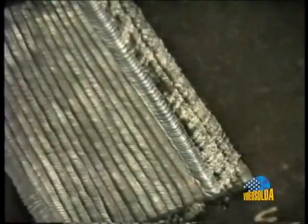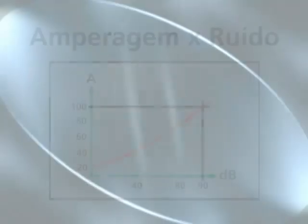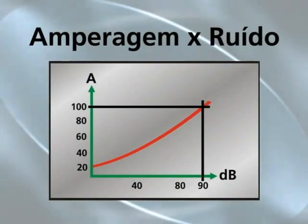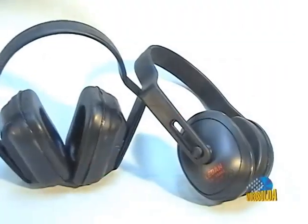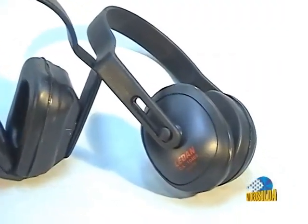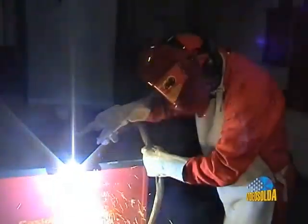Normalmente, os ruídos emitidos nos processos de solda e corte não ultrapassam os limites de segurança. Estes limites, porém, podem ser ultrapassados na preparação e limpeza das peças a serem soldadas e no corte plasma acima de 100 amperes. Nesses casos, é necessário o uso de protetores auriculares adequados.